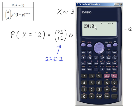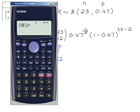That all goes into the calculator: 0.47 to the power of 12 times 1 minus 0.47 to the power of 23 minus 12, or N minus X.